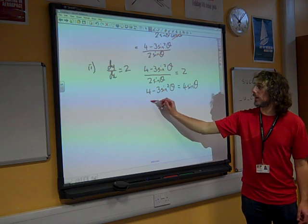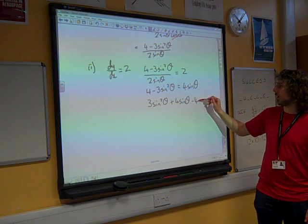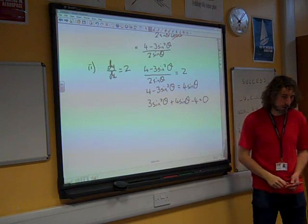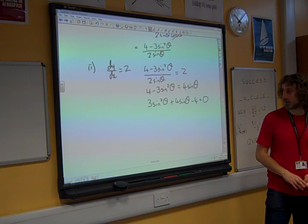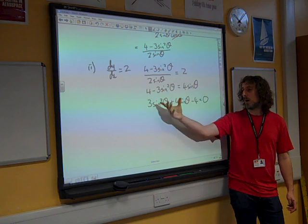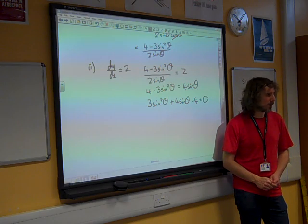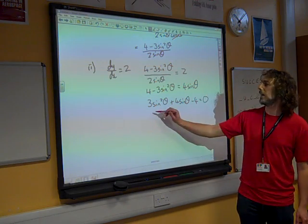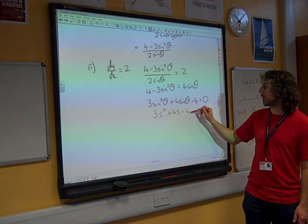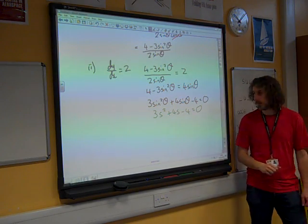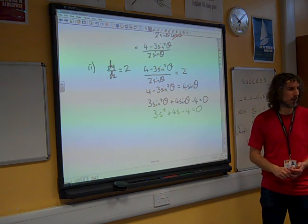We're going to multiply by the 2 sine theta. And this is starting to look really like one of those core 2 questions where they're stealth quadratic. Where you have to use your identities. It's kind of already done, it's already all in terms of sine theta. Can we just factorize this straight away?